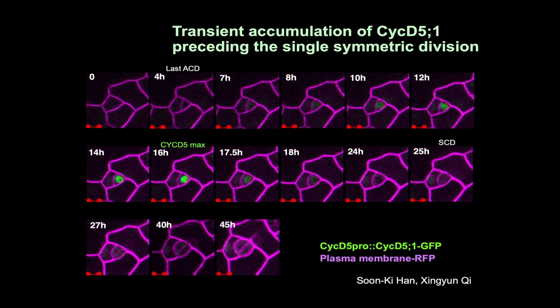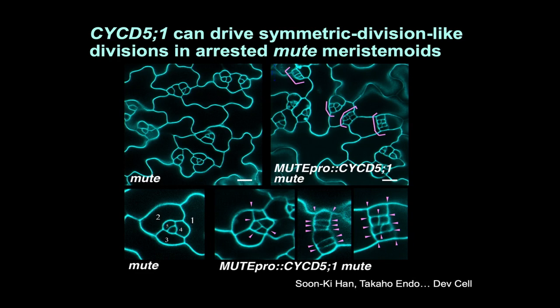We wanted to address whether cyclin D5 could drive this symmetric division. To test that hypothesis, we introduced cyclin D5 into the mute mutant driven by its own promoter, since cyclin D5 is not expressed sufficiently if functional MUTE protein is absent. As mentioned, in the mute mutant background the meristemoid reiterates asymmetric division and arrests. But if you introduce cyclin D5 into this mutant background, you can drive additional divisions. Interestingly, many of them look parallel, resembling the FAMA phenotype, or even perpendicular, making squarish structures. None of them become mature stomata, but this experiment shows that cyclin D5 can drive symmetric-division-like divisions of the arrested mute meristemoid when ectopically introduced.